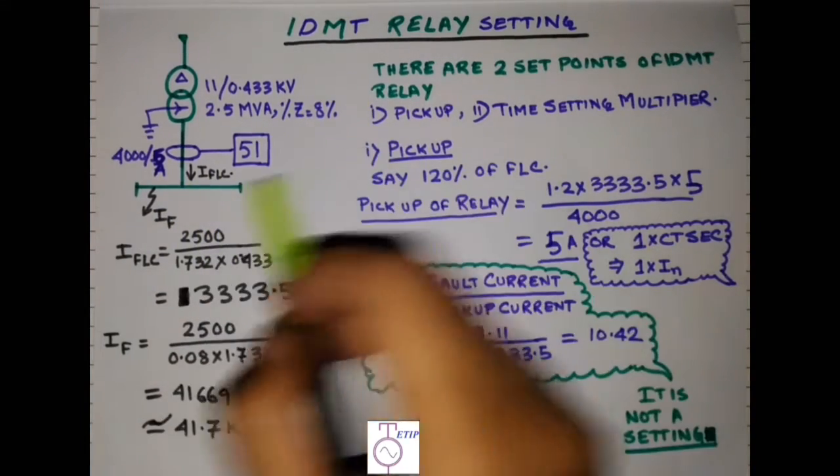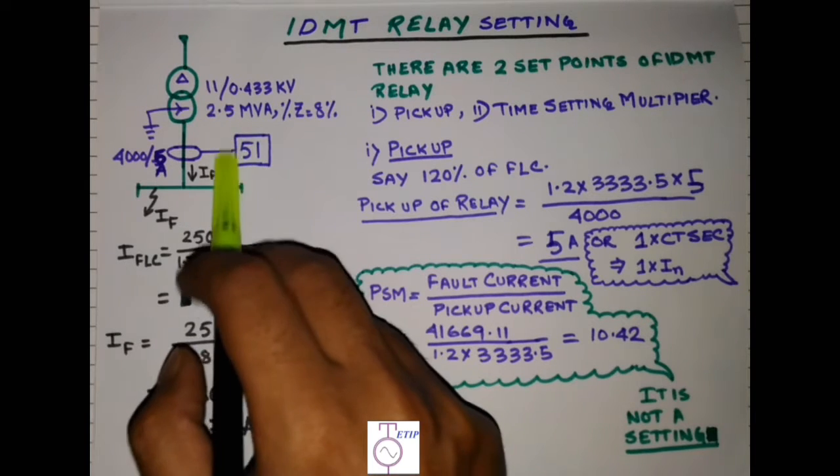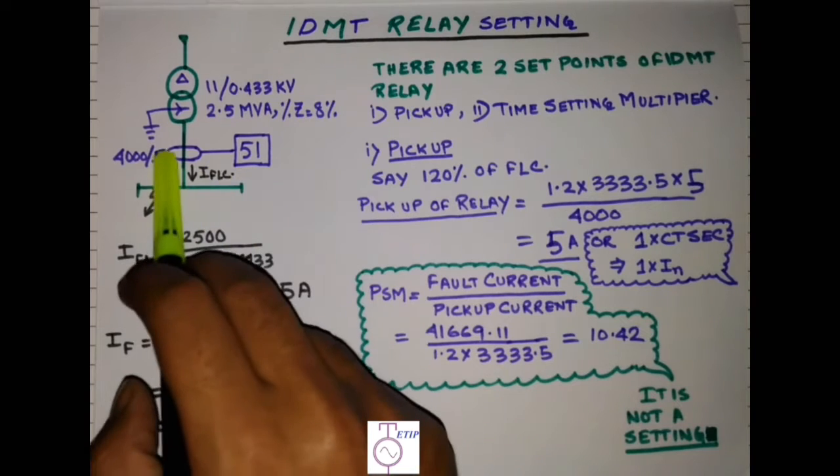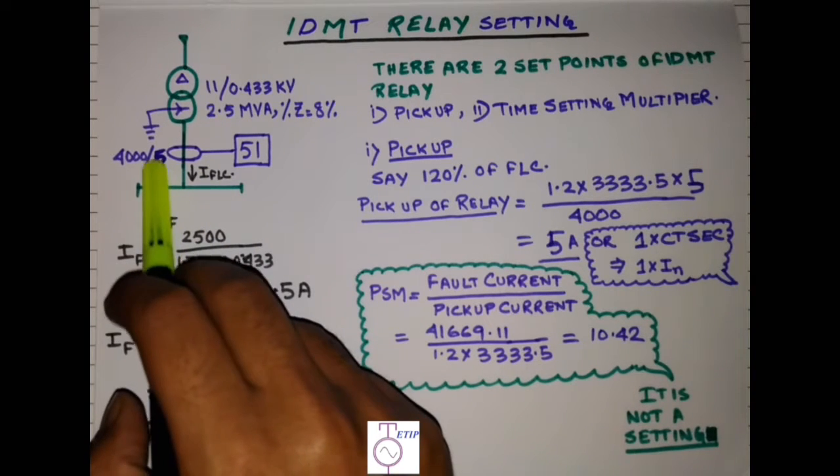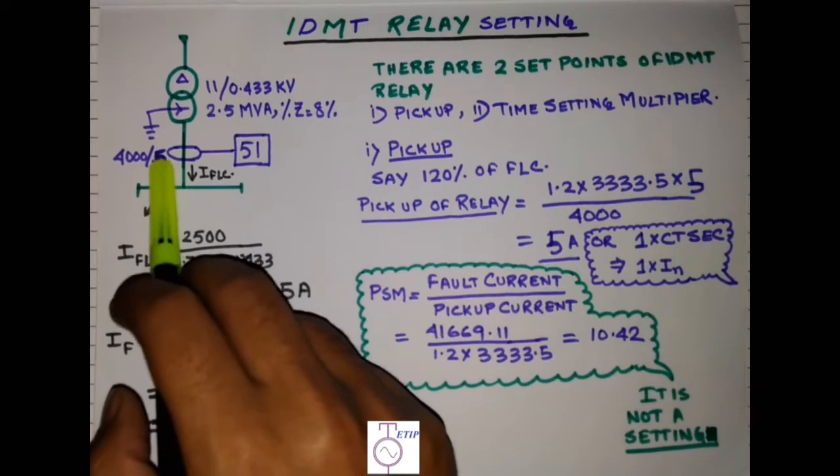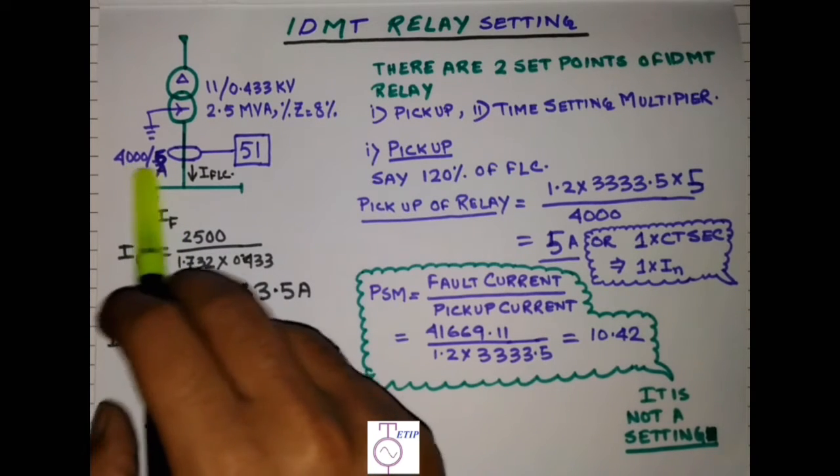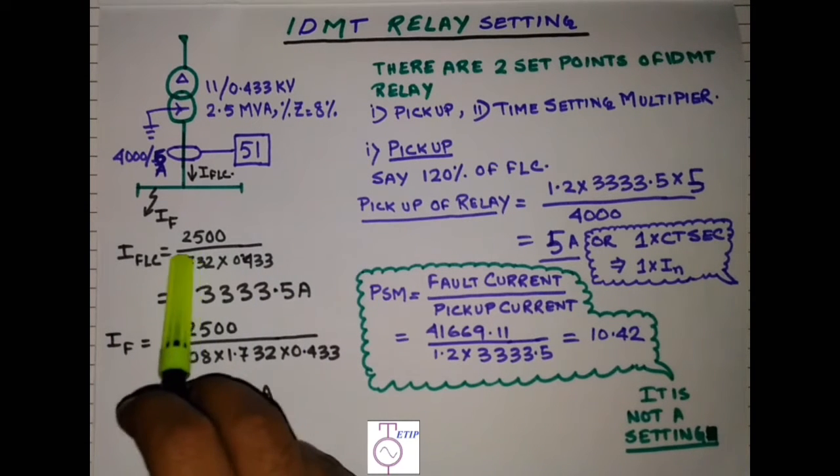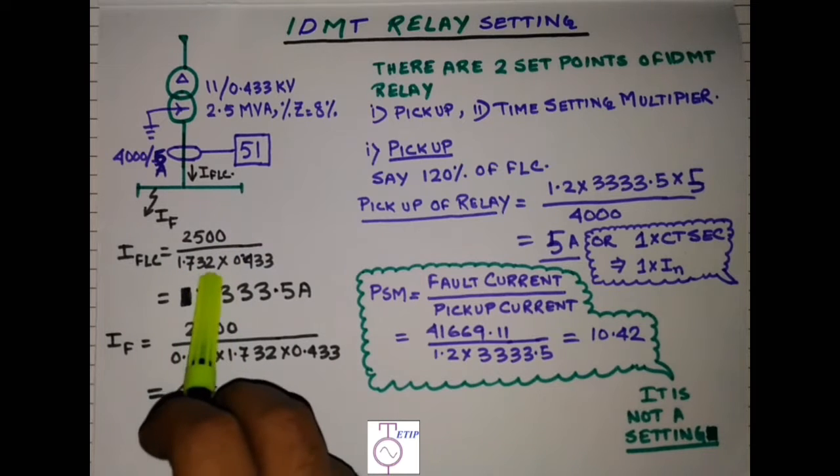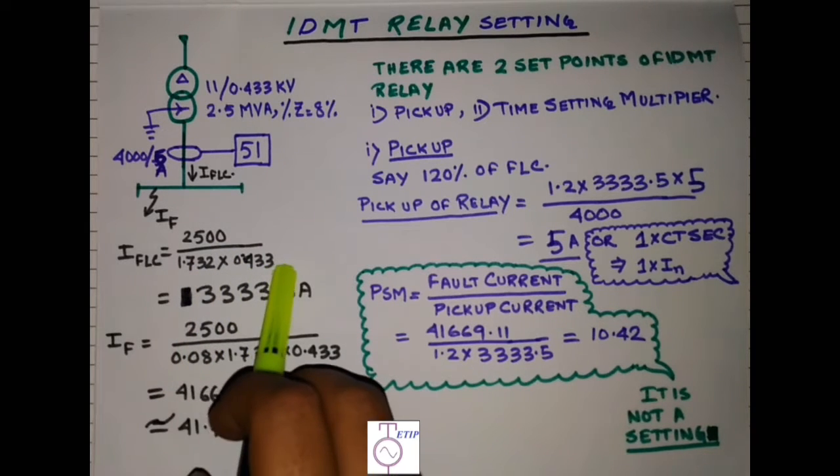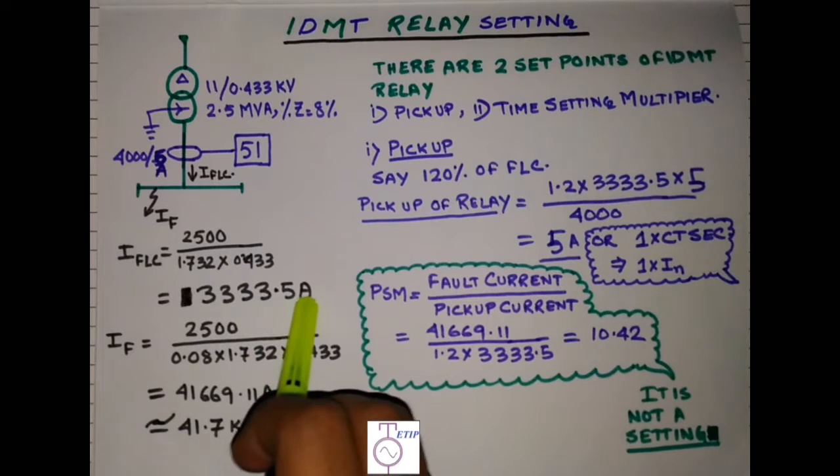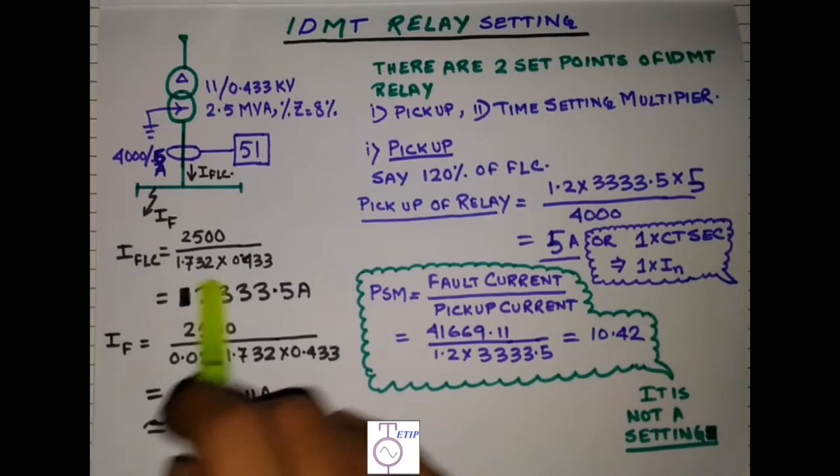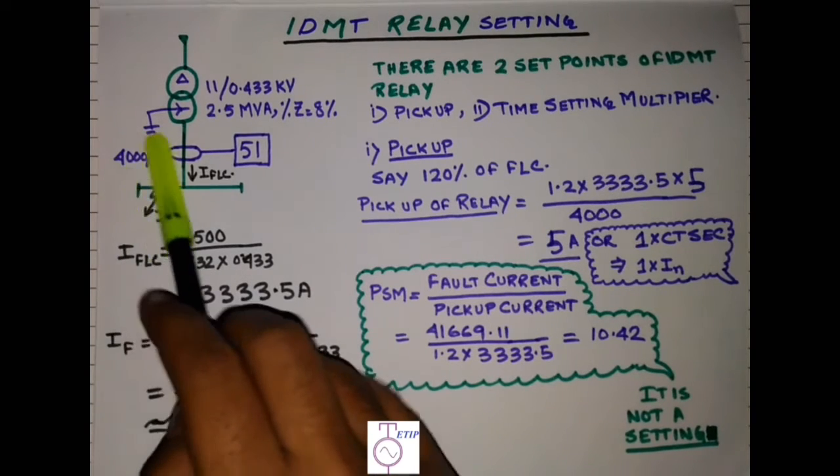Here one IDMT overcurrent relay is connected through a 4000/5 ampere CT. So full load current you can calculate: 2500 divided by 1.732 by 0.433, that is 3333.5 ampere. The CT is taken as 4000 by 5 ampere.